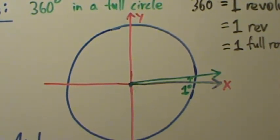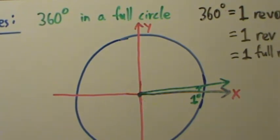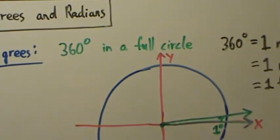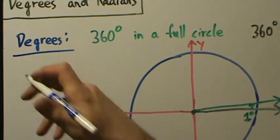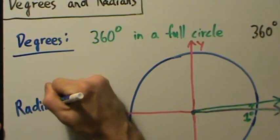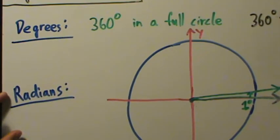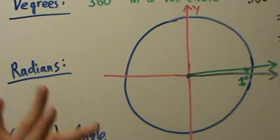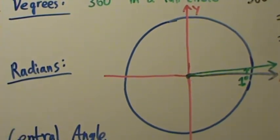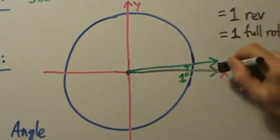That's really it for degrees. We'll talk more about them in later videos when we cover other applications. There are a lot of applications in trig that use degrees, but likewise there are also a lot that use radians, which is another common type of measurement for angles. Just like with degrees, radians measure a rotation, and it doesn't matter how big or small the circle is.